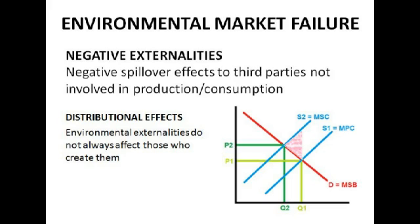Distributional effects happen because environmental externalities don't always affect those who create them. Smoking mostly affects yourself, but a big factory producing pollution can affect people in countries far away — causing flooding or drought. Global warming we produce is negatively affecting other countries more than us. The proposed solution is to impose tax on the output of industrialised nations and use that revenue to compensate citizens in other countries.